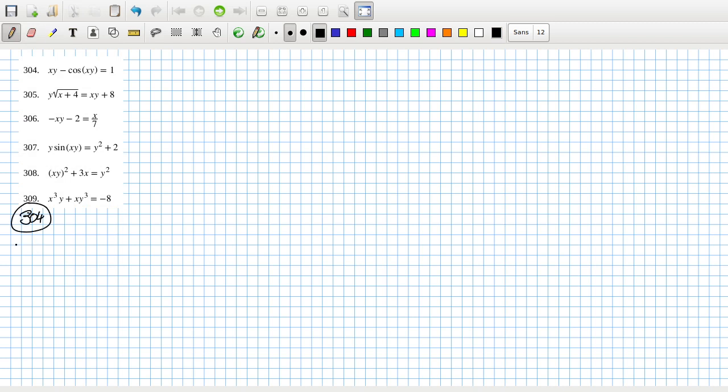We'll need the product rule. One times y plus x times dy/dx, and then cosine becomes minus sine, so that's sine(xy) times (y plus x dy/dx) equals zero.